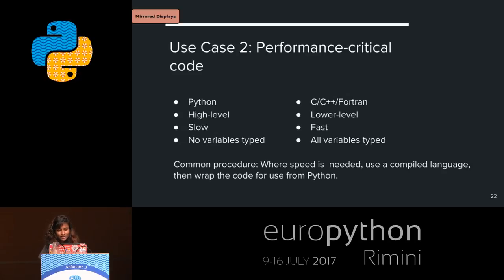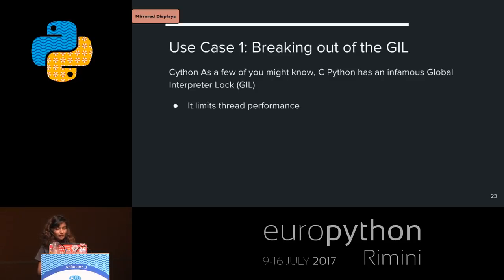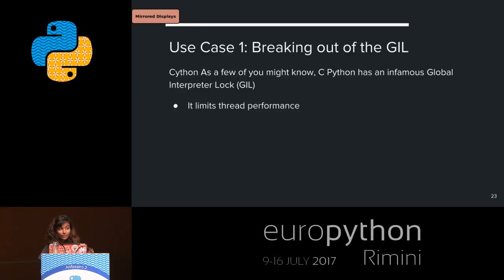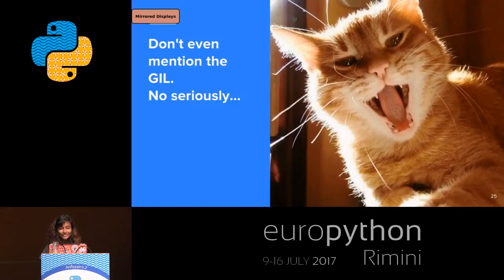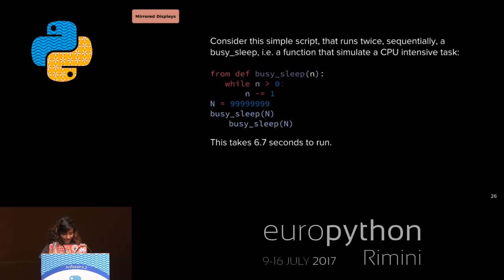The third use case involves the GIL — the Global Interpreter Lock. When the lock is acquired, it limits thread performance: even if you're running on a multi-core CPU, you can't harness its full power. Cython provides a solution to break out of the GIL wherever required. As an example, here's a small function that keeps a CPU busy with lots of computation — it takes 6.7 seconds to run on a laptop. That's the sequential version with no threads.